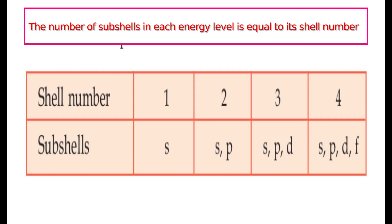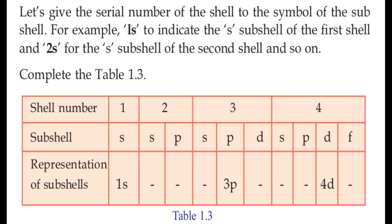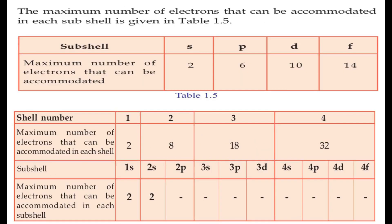The main orbitals are called sub-shells. We use the same names for sub-shells: S-sub-shell, P-sub-shell, D-sub-shell, and F-sub-shell. The S-sub-shell holds 2 electrons, P-sub-shell holds 6 electrons, D-sub-shell holds 10 electrons, and F-sub-shell holds 14 electrons.